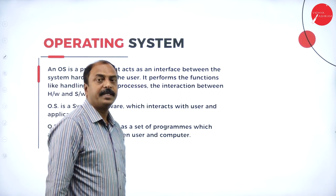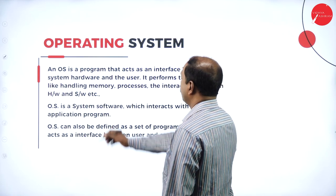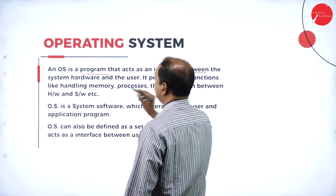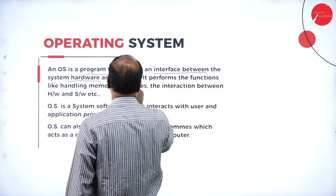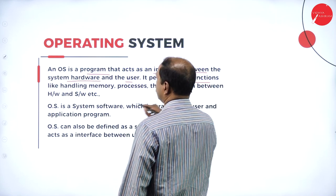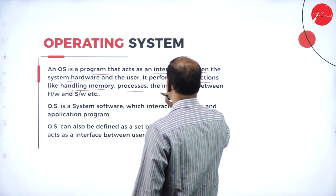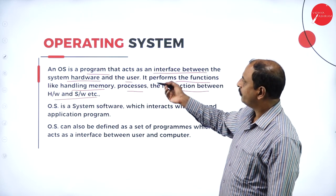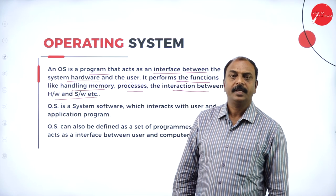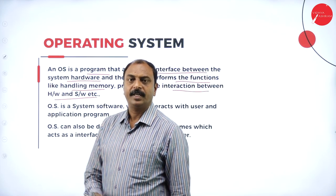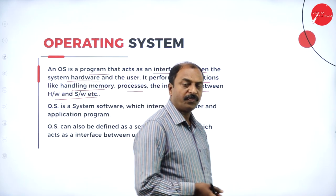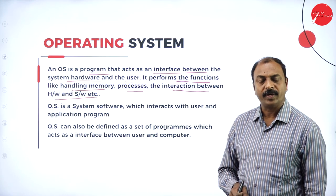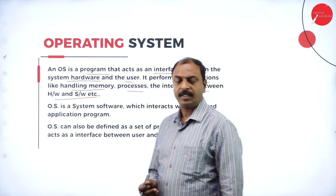Now let us see the definition of an operating system. An operating system is a program that acts as an interface between the system hardware and the user. It performs functions of handling memory, processes the interaction between hardware and software. The OS is a system software — it is the first software loaded when you boot the computer.